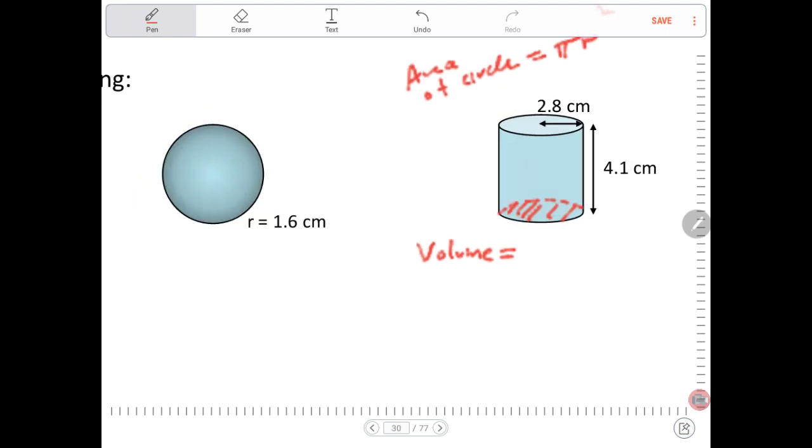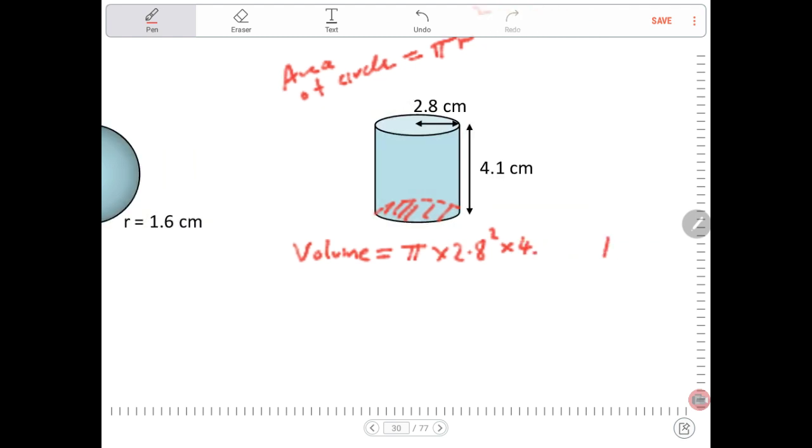So we'll go pi times the radius. The radius of this circle is 2.8 squared multiplied by the height of the cylinder, which is 4.1. Put that into the calculator and see if you can get the right answer.